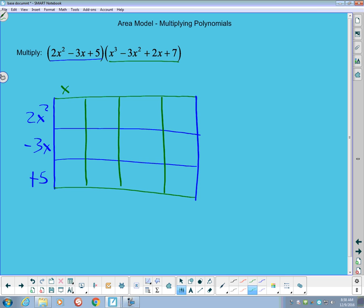Then I'll have x³ - 3x² + 2x + 7 there, and I'm just going to fill in the areas of the individual boxes. In this upper left-hand corner, when I multiply together the 2x² and the x³, I get 2x⁵.